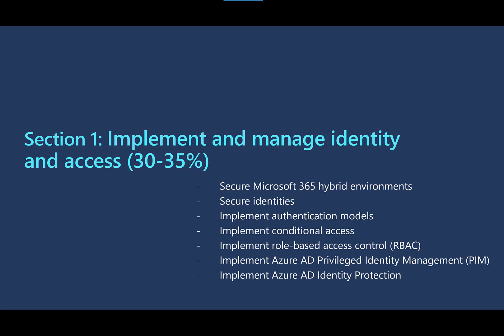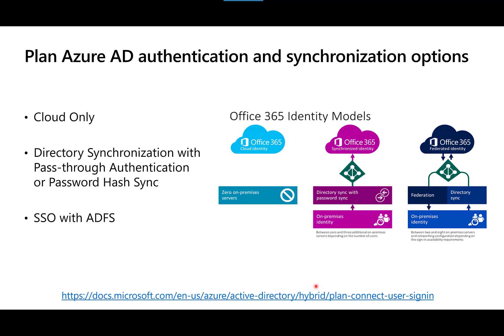In section one, we'll be looking at configuring and securing identities for Microsoft 365. This section covers the different authentication methods you can use, how to set up and manage conditional access, implementing RBAC and Privileged Identity Management (PIM) for higher privilege activities, and finally how to manage Azure AD Identity Protection.